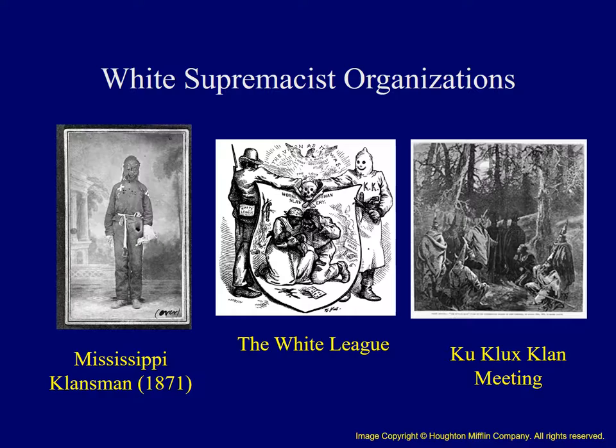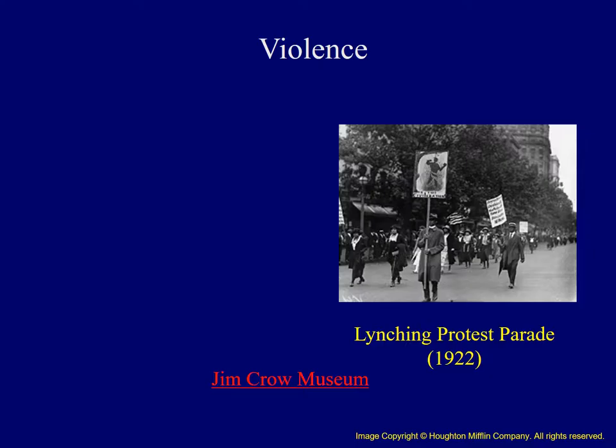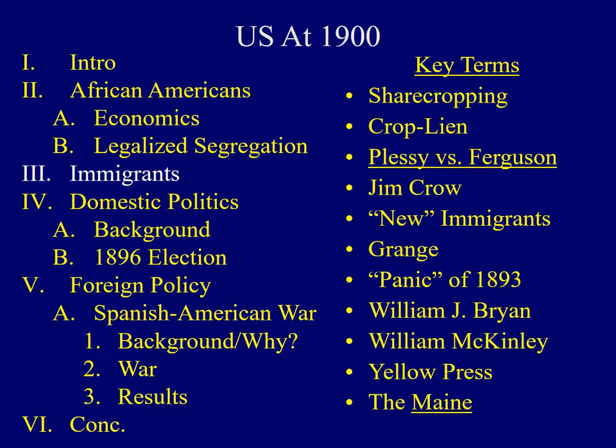Black Americans also had to be concerned about violence, or at least the threat of violence, with organizations like the Ku Klux Klan or the White League, as shown in these images here. Violence against black Americans was a real concern, as these statistics from the late 1800s and early 1900s show. Below is a hyperlink to the Jim Crow Museum; I would encourage people interested in this subject to click on the hyperlink and find additional information.